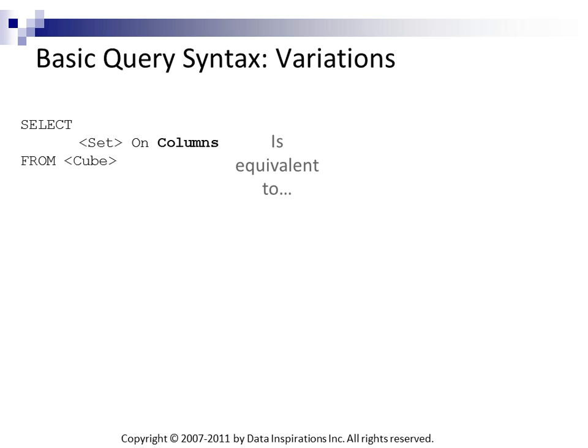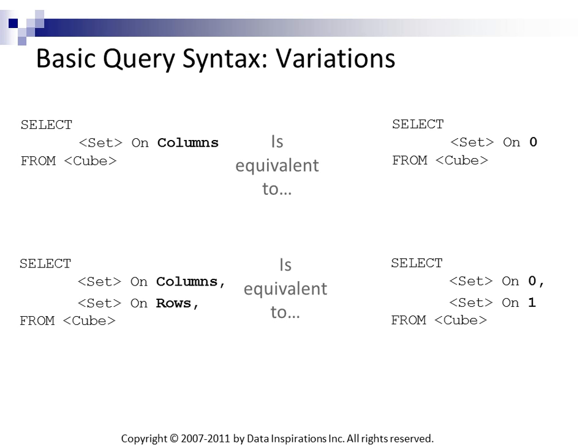We can say SELECT set ON COLUMNS FROM a cube, which is equivalent to SELECT set ON 0. We can reference our axes by number: zero represents columns and one represents rows. You would do that because there are cases — for instance, when using OPENQUERY functions — where I write a SELECT statement in T-SQL that executes an MDX statement and returns results as part of a Transact-SQL statement. That OPENQUERY function has an 8,000 character limit on the MDX string.